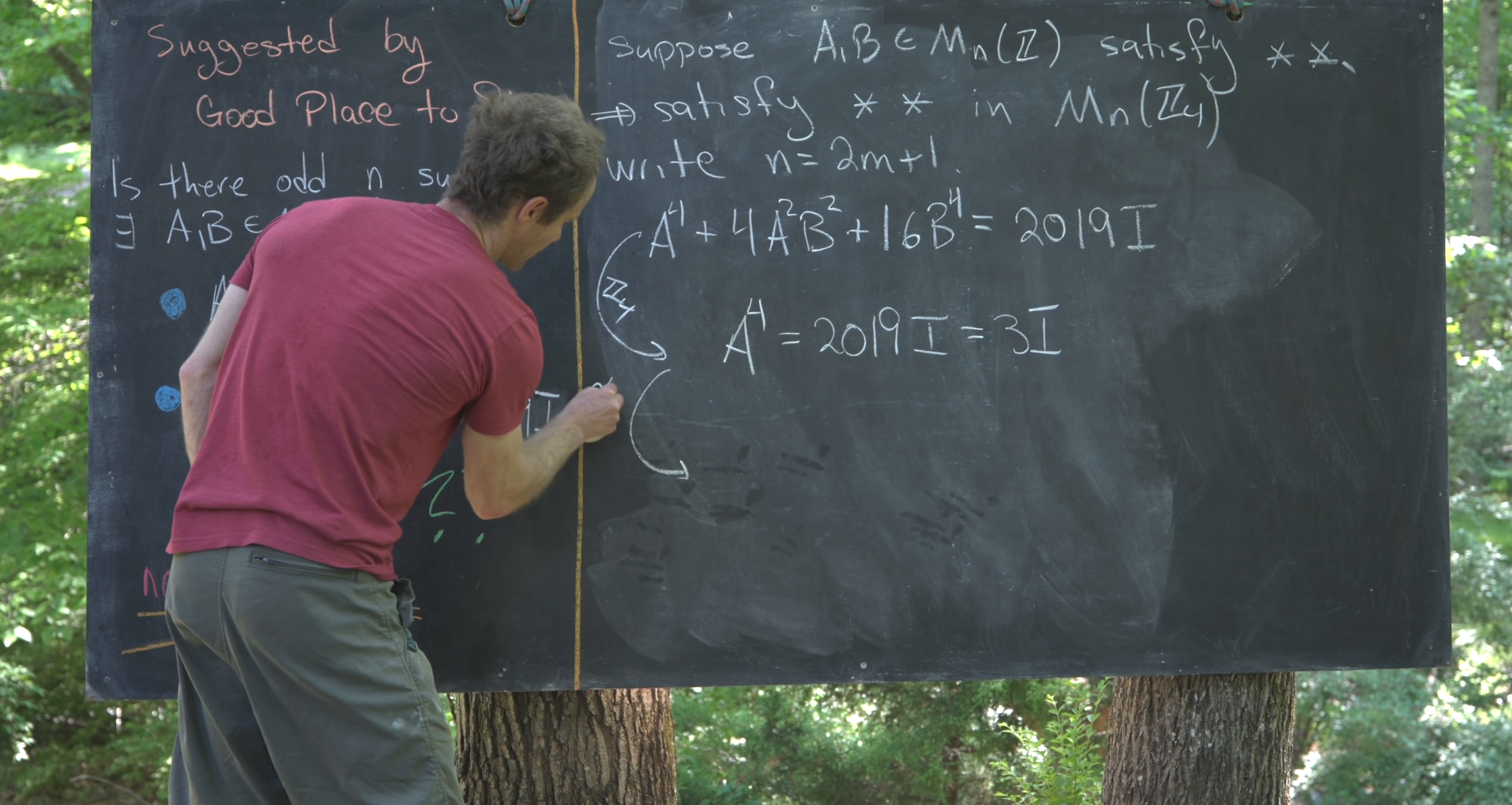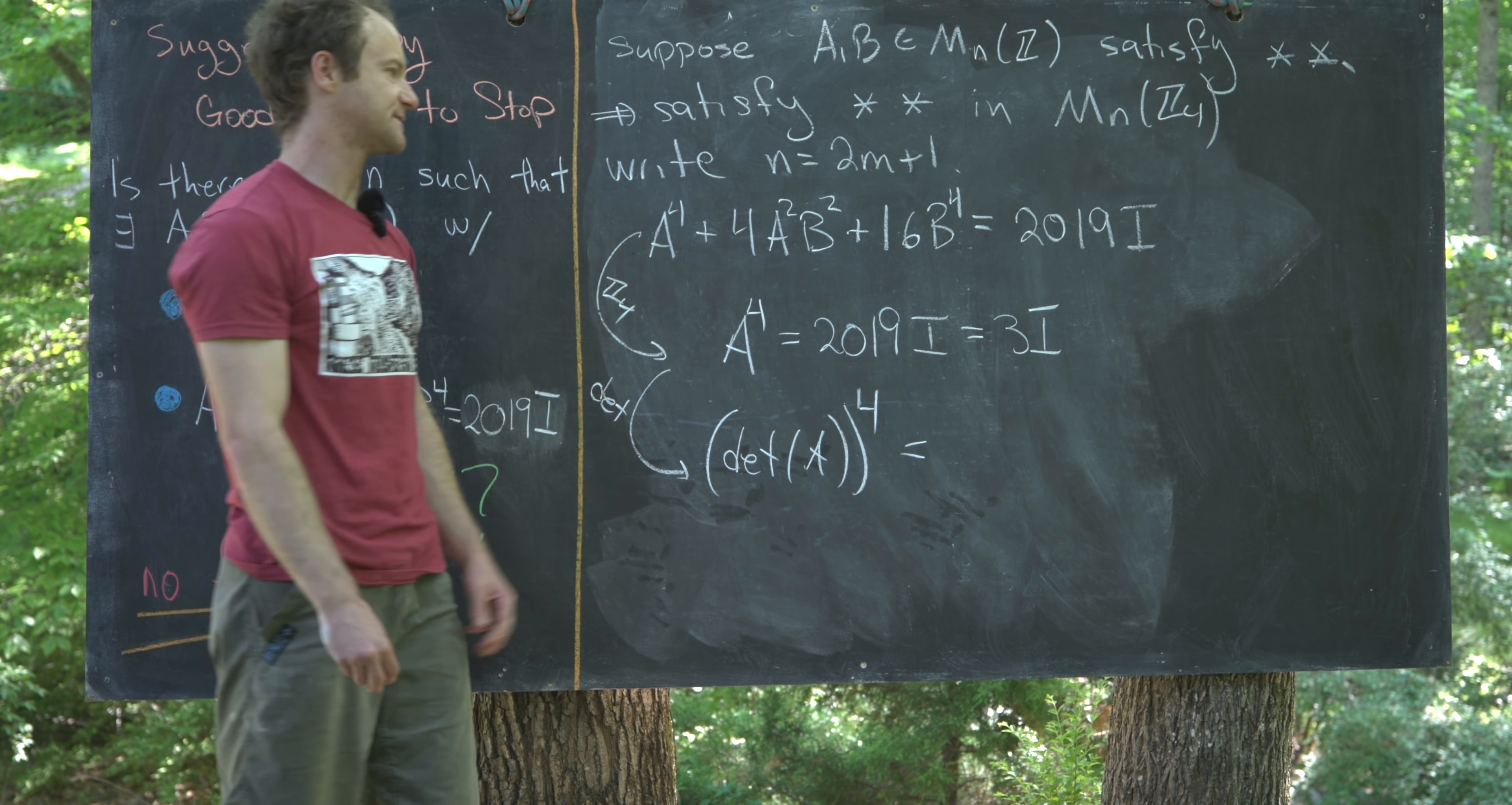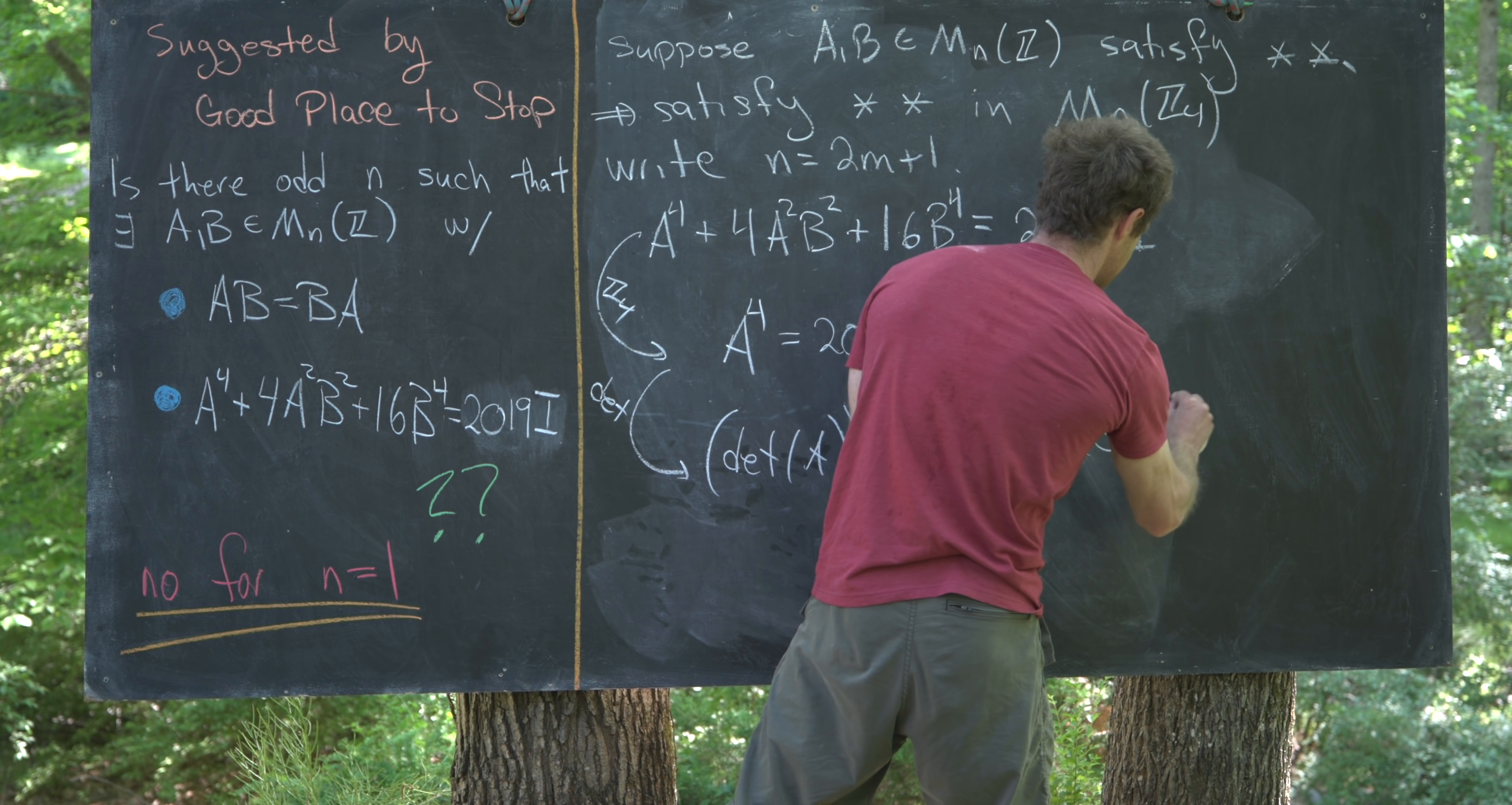Okay. So, just to reiterate here, we're going to take the determinant, and then we'll get the determinant of A all to the 4th power, just by the multiplicative rule of the determinant. And then, over here, we'll have the determinant of 3 times the n by n identity matrix, but that's just 3 to the n, but that's 3 to the 2m plus 1, given the fact that n is equal to 2m plus 1.